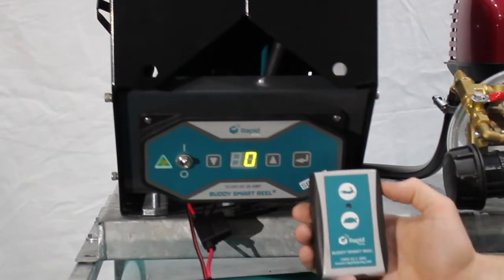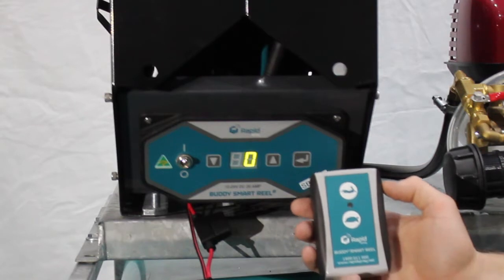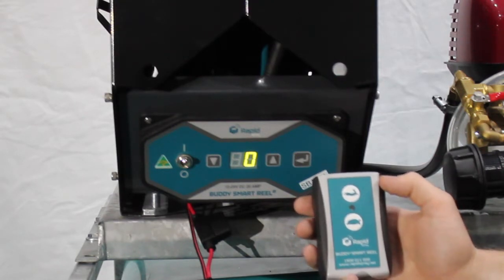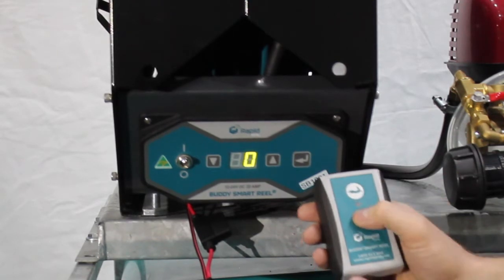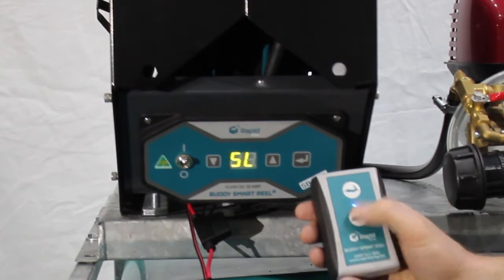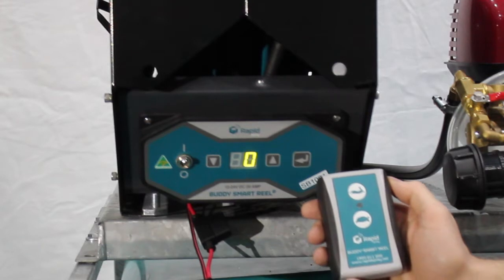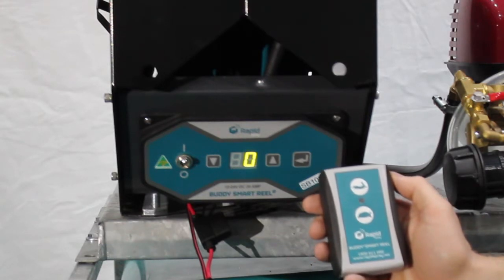Test the pairing procedure has happened correctly by testing one of the fast or slow speed buttons. Your buddy wheel remote is now paired to your reel.